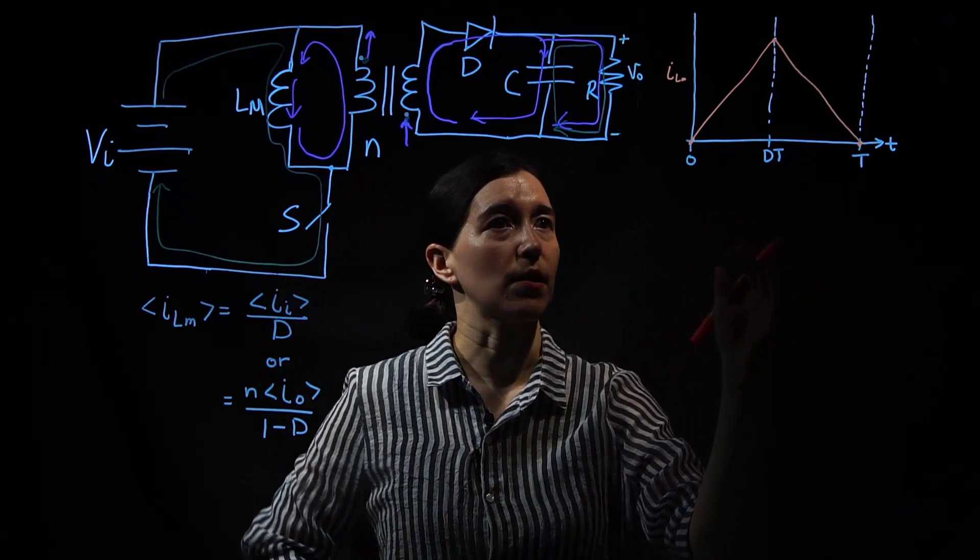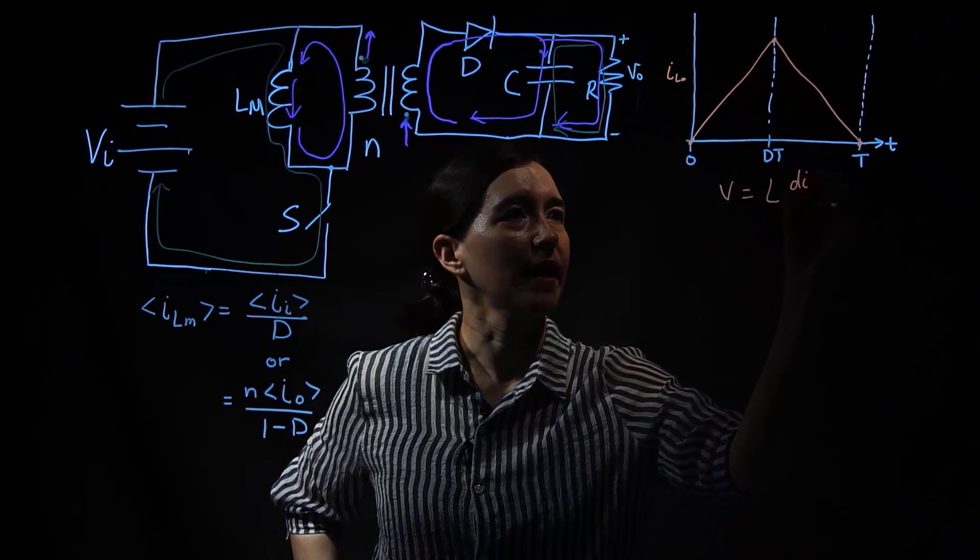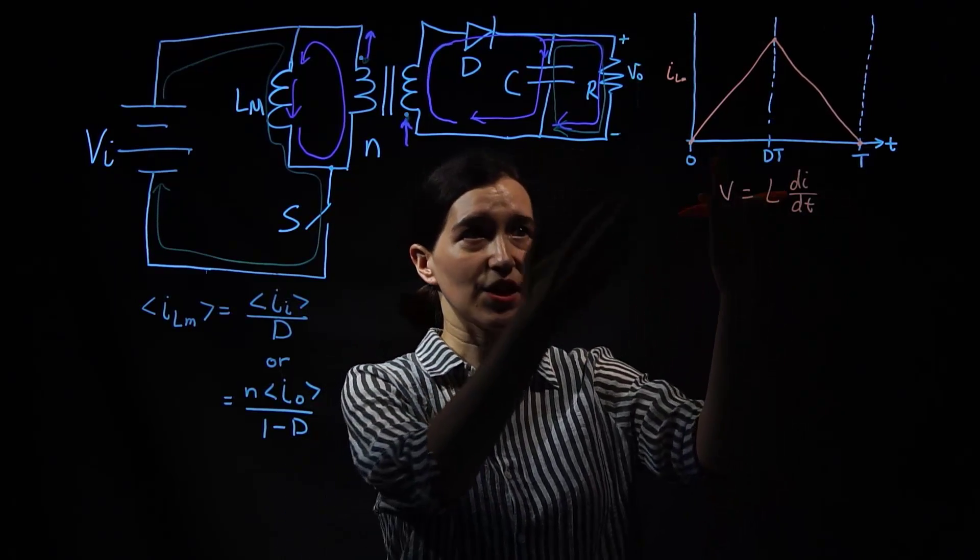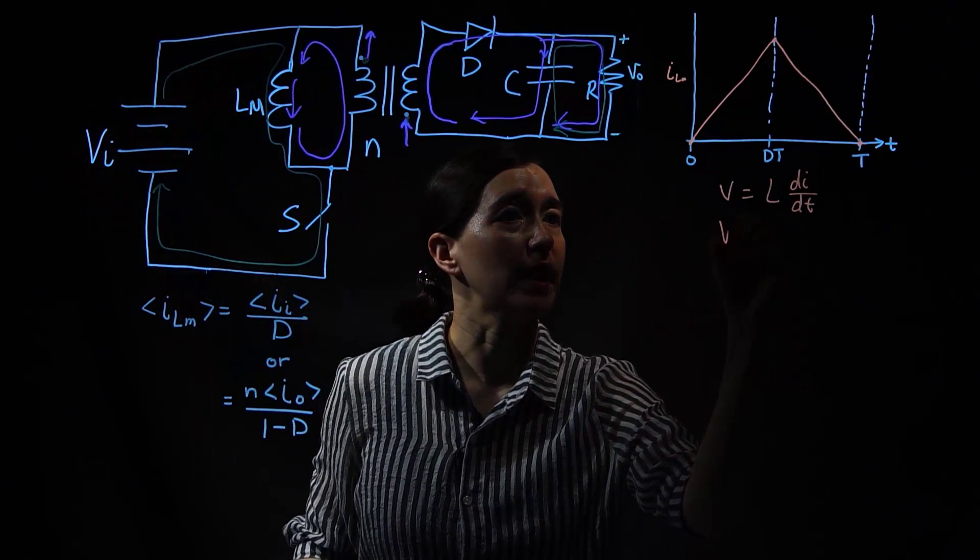So let's look at that first. Let's just write the inductor equation. So V equals L di dt. Now we need to apply it to this first phase. So what's the voltage over this inductor? It's Vin. So we have Vi.